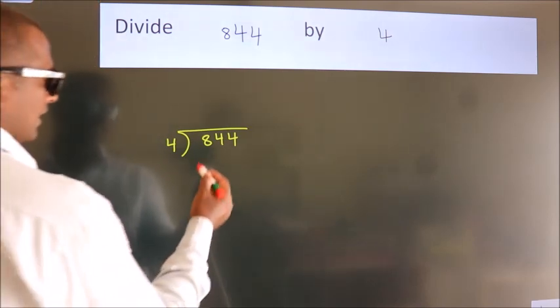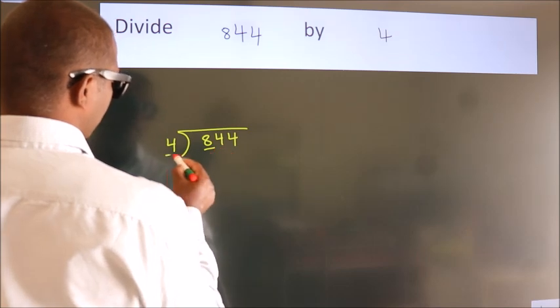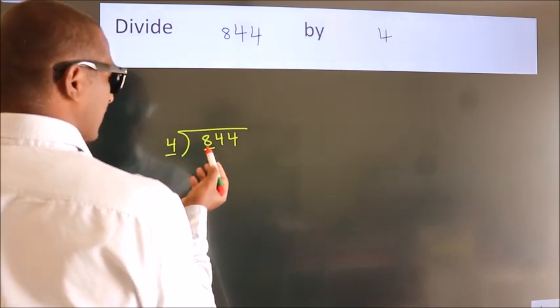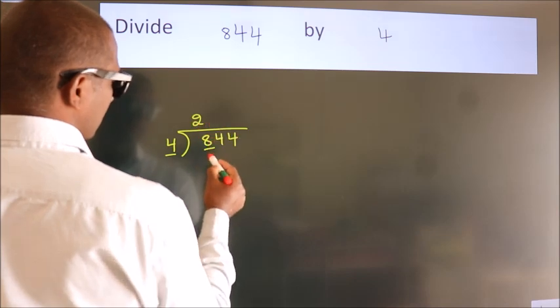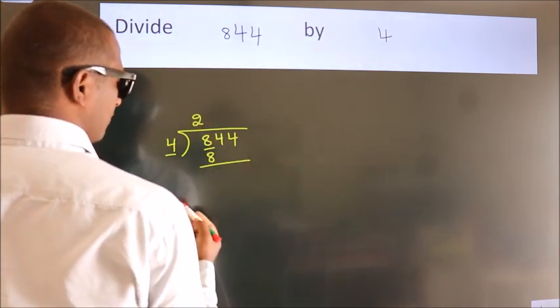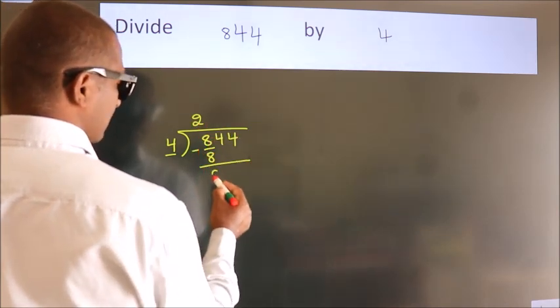Next. Here we have 8, here 4. When do we get 8? In 4 table. 4 2s, 8. Now we should subtract. We get 0.